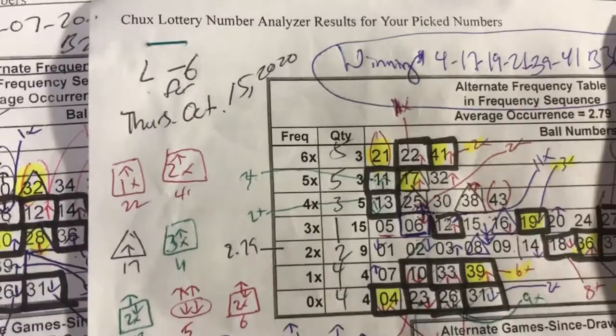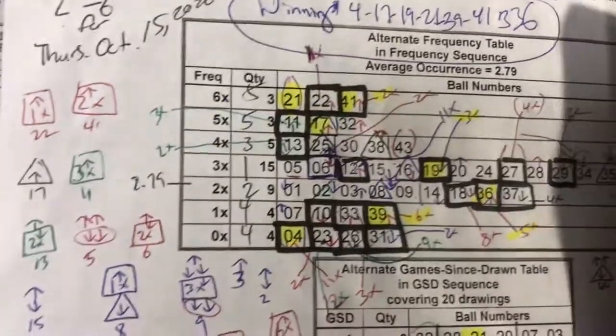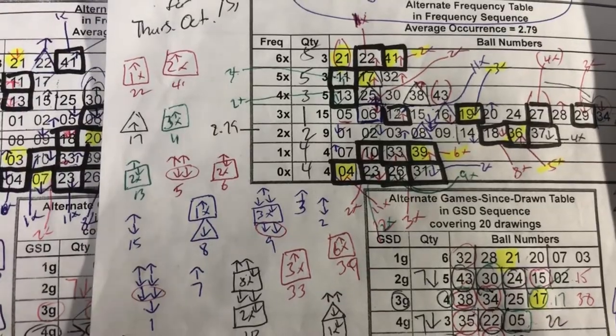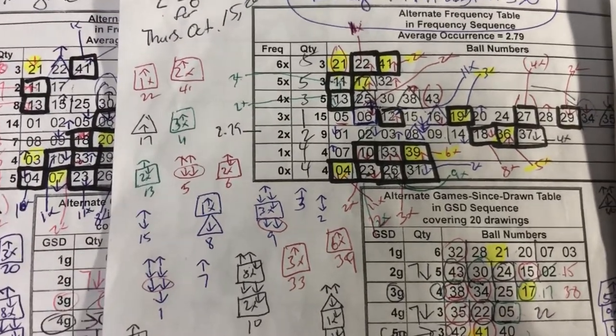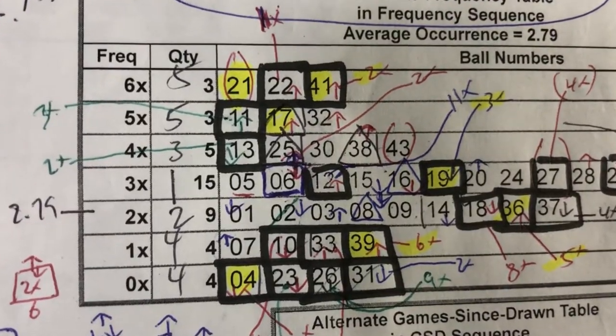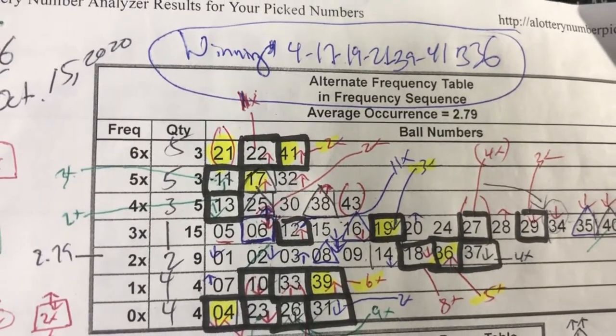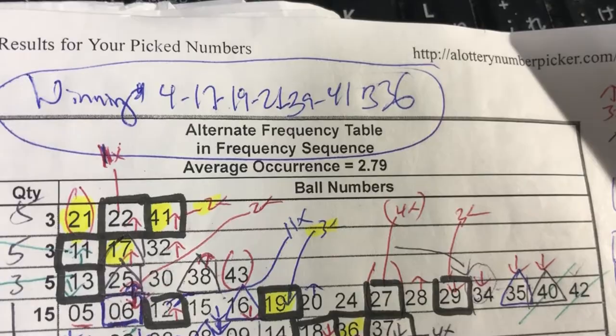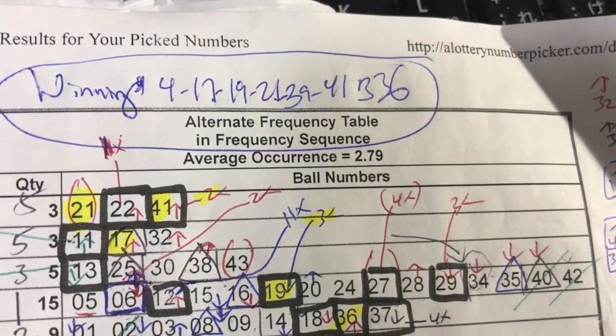Let's look at Thursday, October 15th, for example. I can't promise you that you're going to win, but I'm pretty certain that you'll get at least two numbers. This is going to be hard to explain. The last winning draw was on October 15th. The winning numbers were 4, 17, 19, 21, 39, 41, bonus number 36.